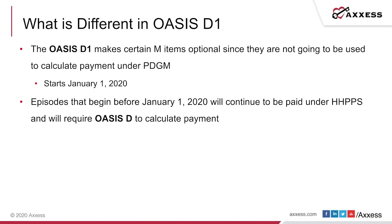Episodes that begin January 1st, 2020 or after will be paid under the PDGM payment system for Medicare. Episodes that begin before January 1st, 2020 will continue to be paid under Home Health PPS. So there's a period of about 60 days as we transition into PDGM where some patients may continue under Home Health PPS while others admitted or recerted with start dates after January 1st will be paid under PDGM.